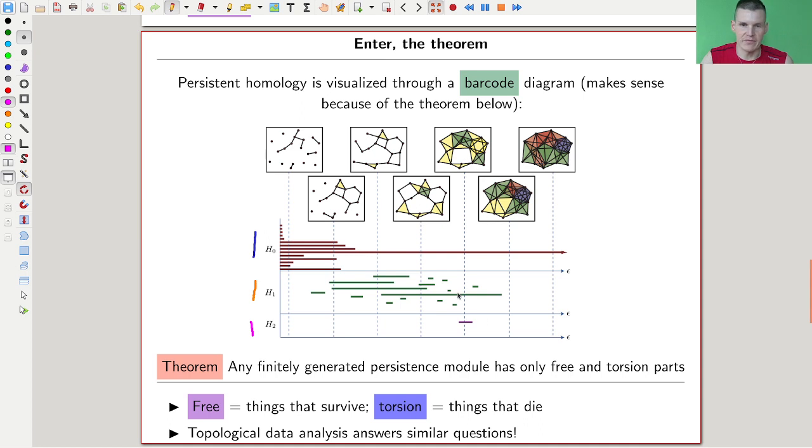H2 will then measure kind of the existence of tetrahedrons, which are always a little bit difficult to see in those pictures. But this is called a barcode diagram - it measures when a new structure appears and when it dies. And this makes sense - it's kind of a structure theorem of persistent homology. You always have something that appears and something that dies, or it goes on forever. The things that go on forever have an algebraic description as free modules, and the ones that appear at one point and die at one point are the so-called torsion parts. And topological data analysis answers similar questions, studies similar properties - to find the shape of data. That's essentially the whole idea.